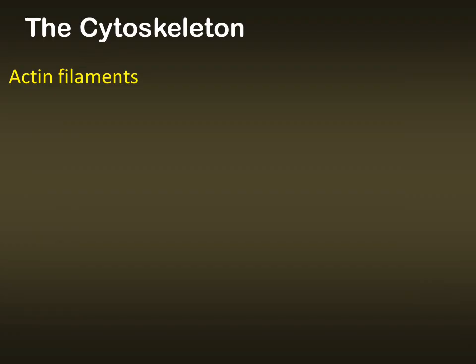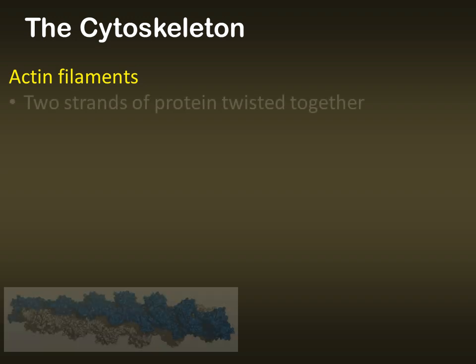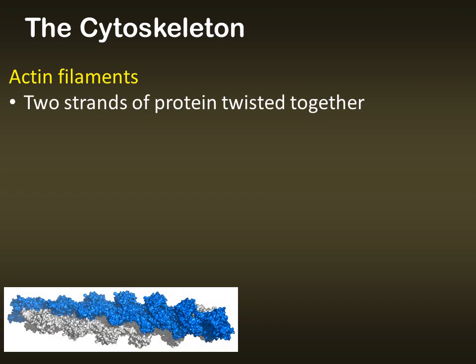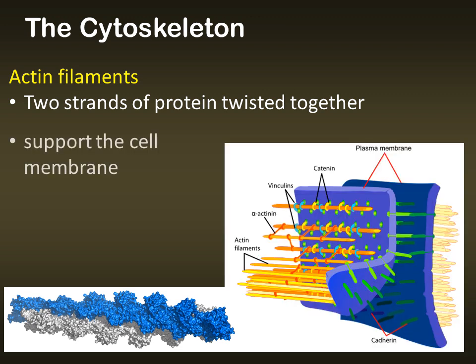Actin filaments are ubiquitous in eukaryotic cells — they are everywhere in all organisms — and they are much thinner than microtubules. These are just two strands of protein that twist around each other. They are mostly associated with support of the cell membrane. The fine extensions called microvilli that we talked about briefly as reaching out from intestinal cells — those fine microvilli are supported by actin filaments as well.